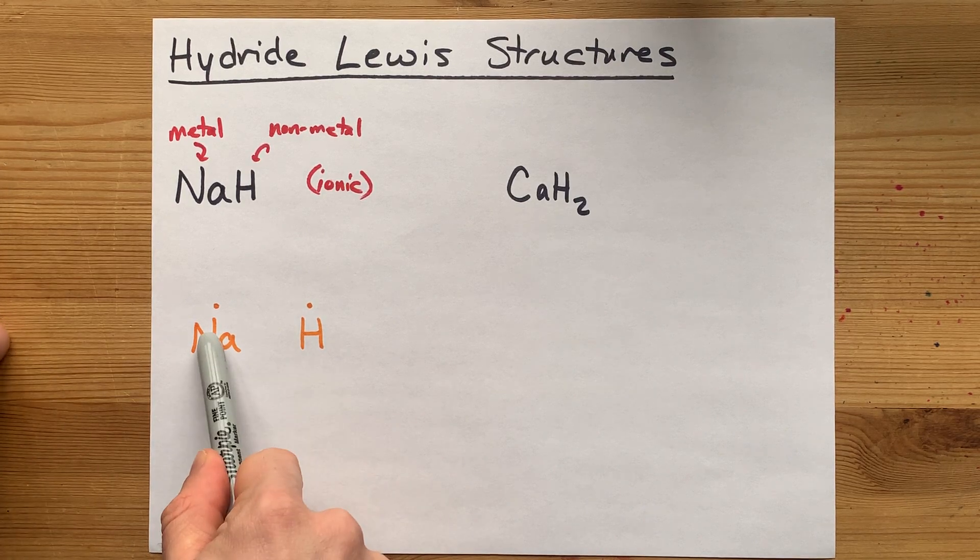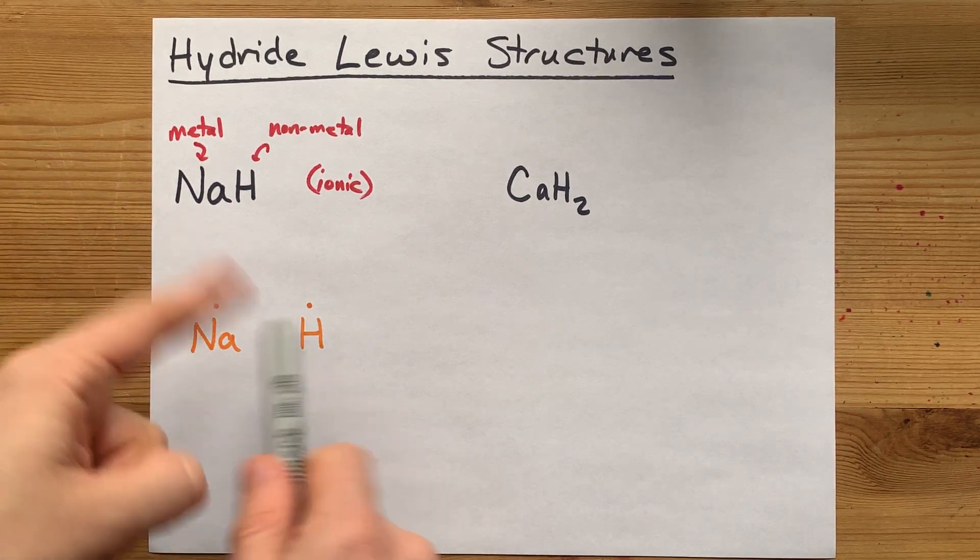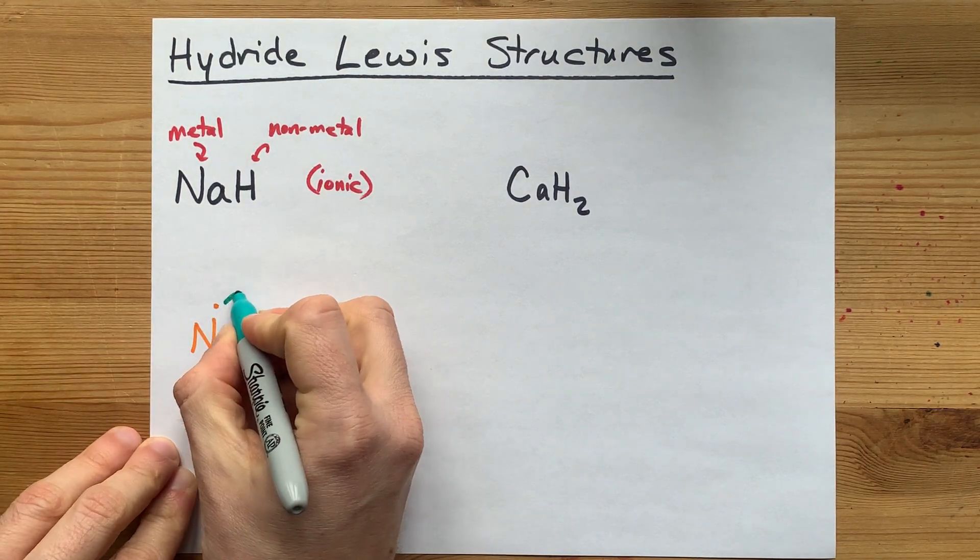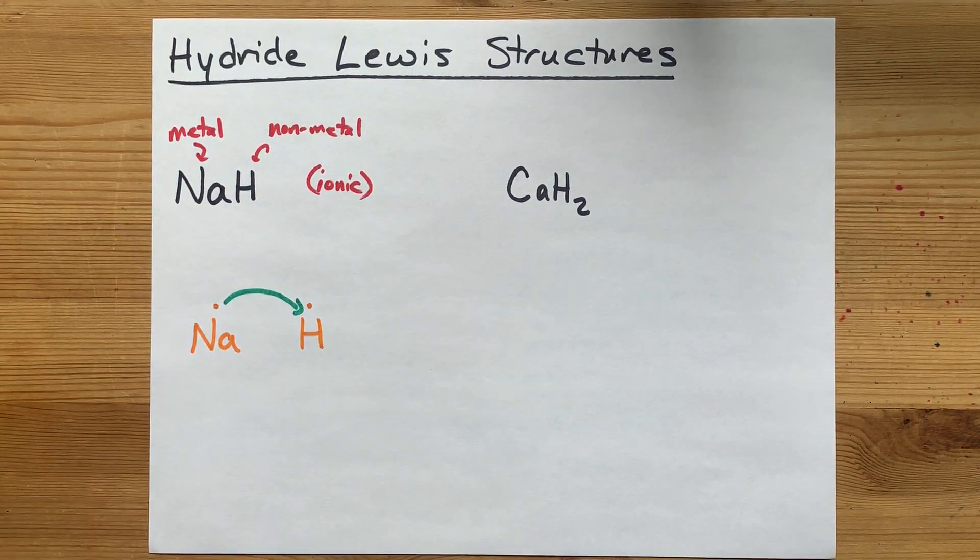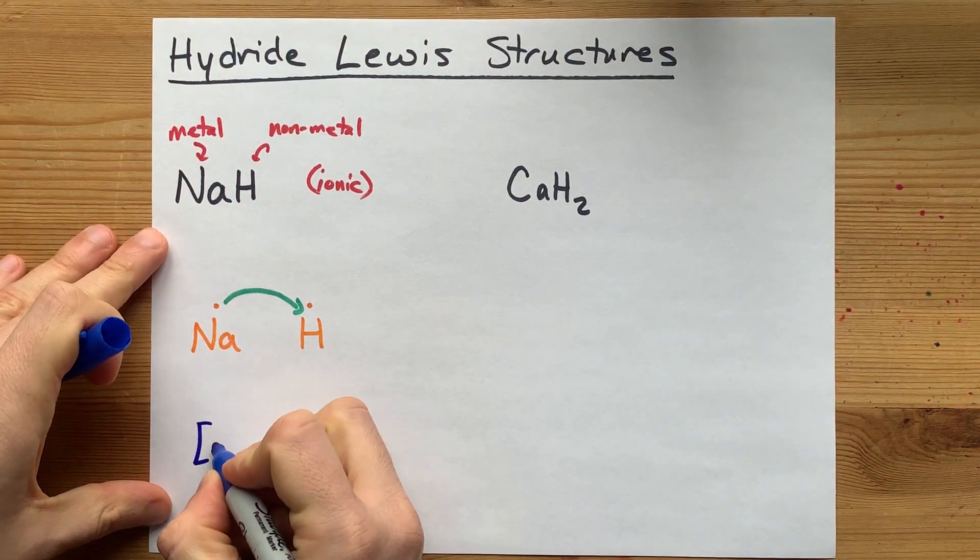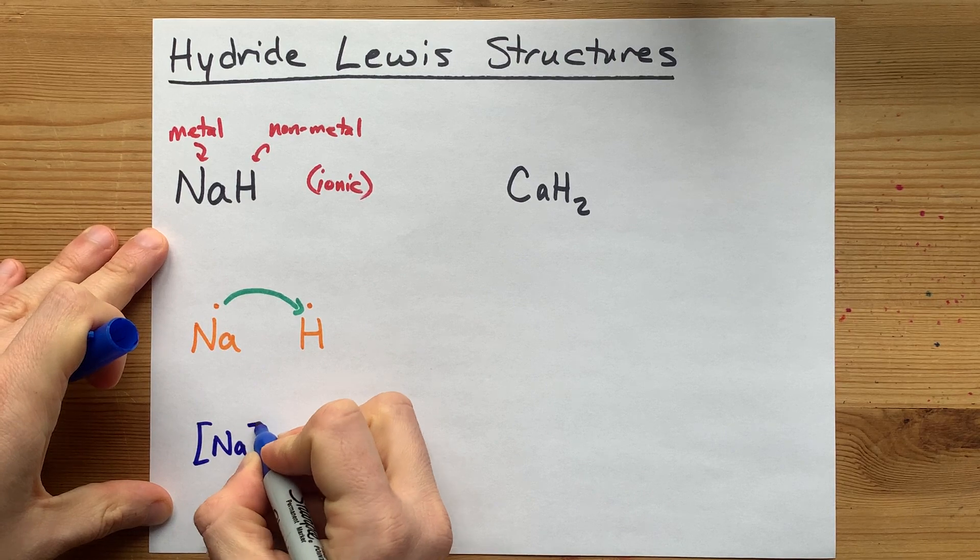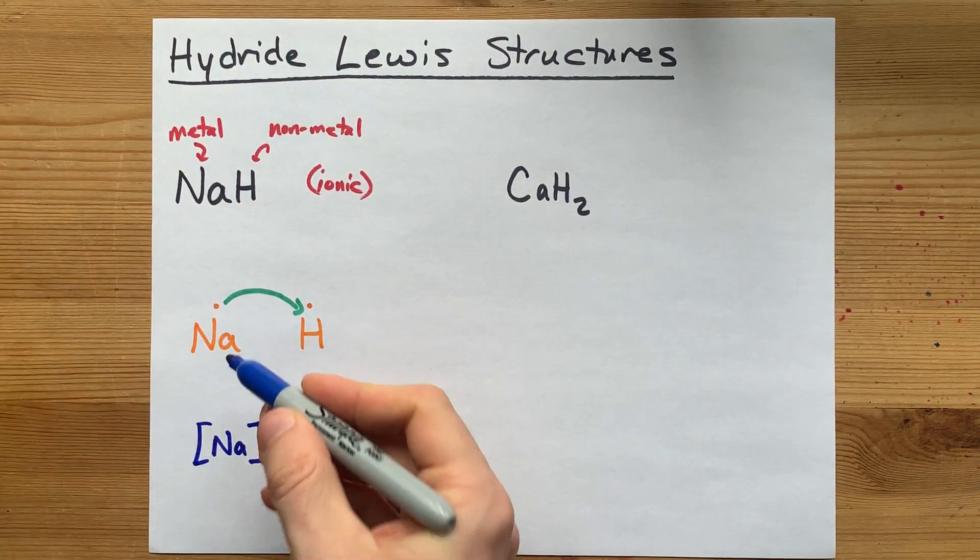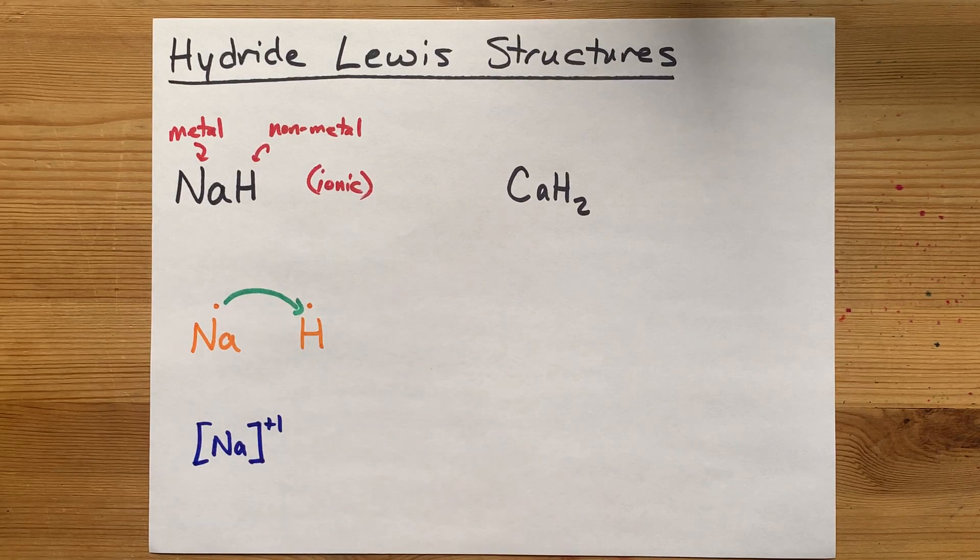So, what happens here is the metal donates its electron to the non-metal, just like a regular ionic bond. That is going to go over there. And what do you end up with? Well, you end up with a sodium atom that has no electrons in what was its outer shell, and a plus-one charge because it lost a negatively charged electron.